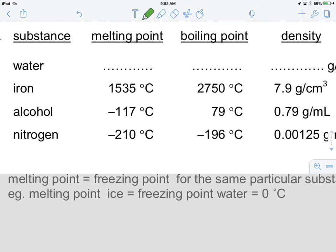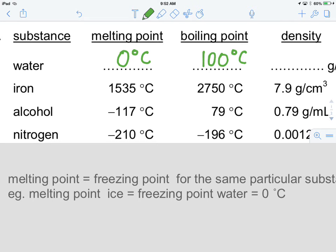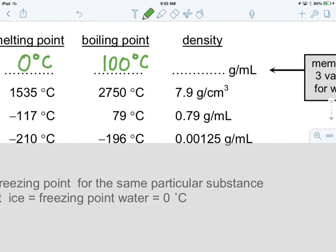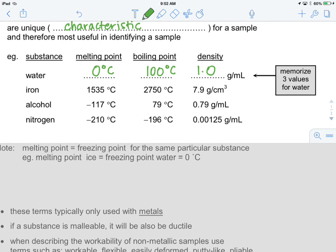So, we know, for example, for water, its melting point, which is also its freezing point, is zero degrees Celsius. And we know that to be true. We also know its boiling point is 100 degrees Celsius. And for some of you, you may be already well aware that the density of water is 1.0 grams per milliliter.